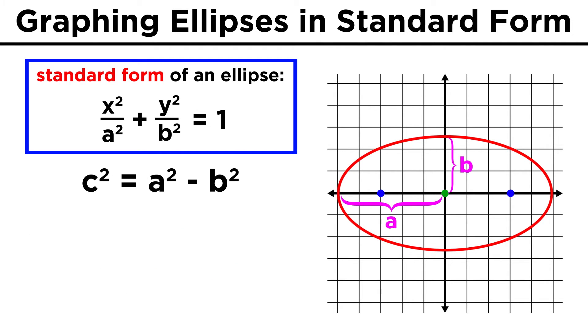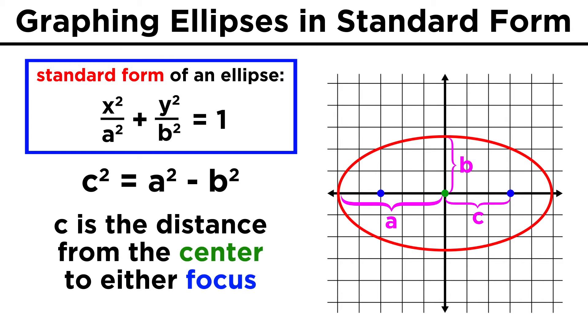Beyond this, we can use this equation, C squared equals A squared minus B squared, and if we solve for C, that is the distance from the center to either of the foci.